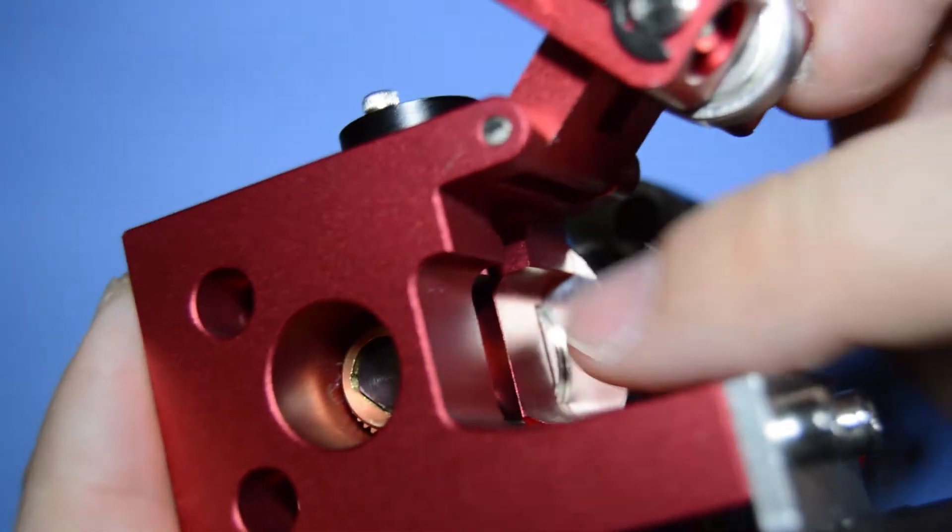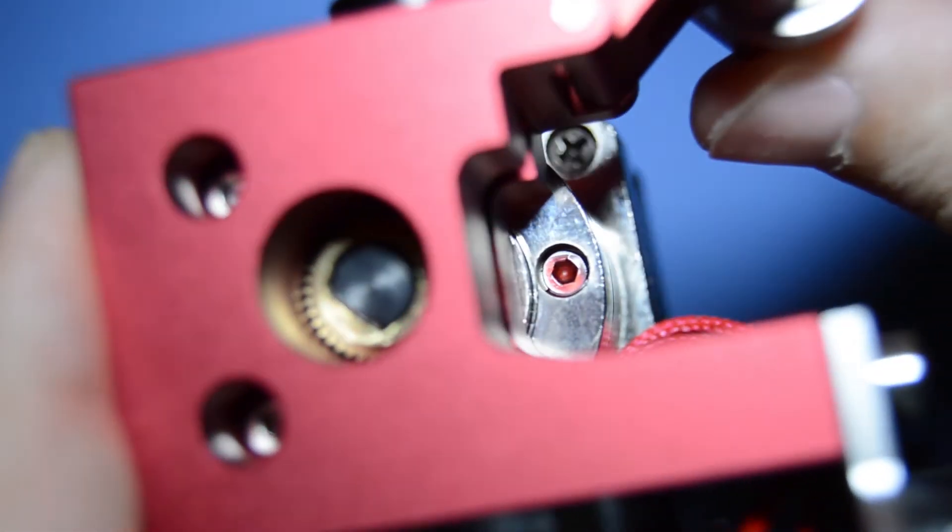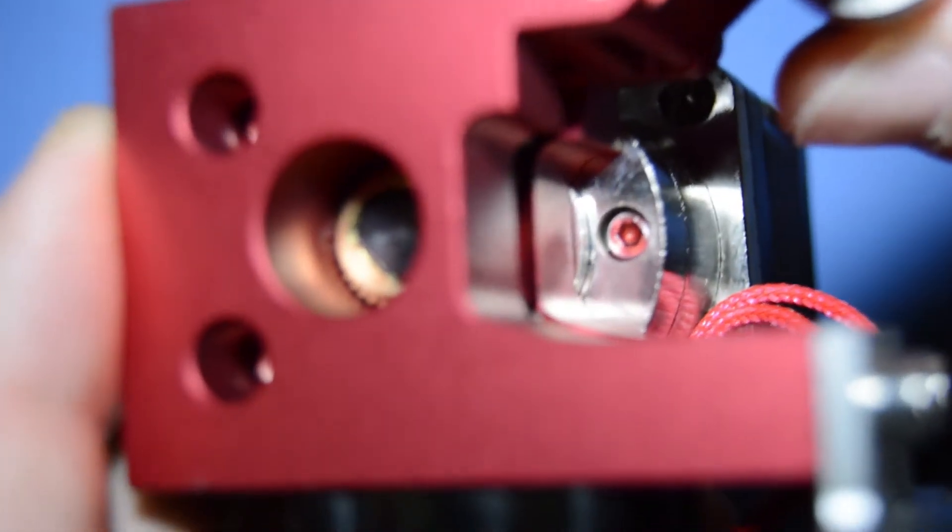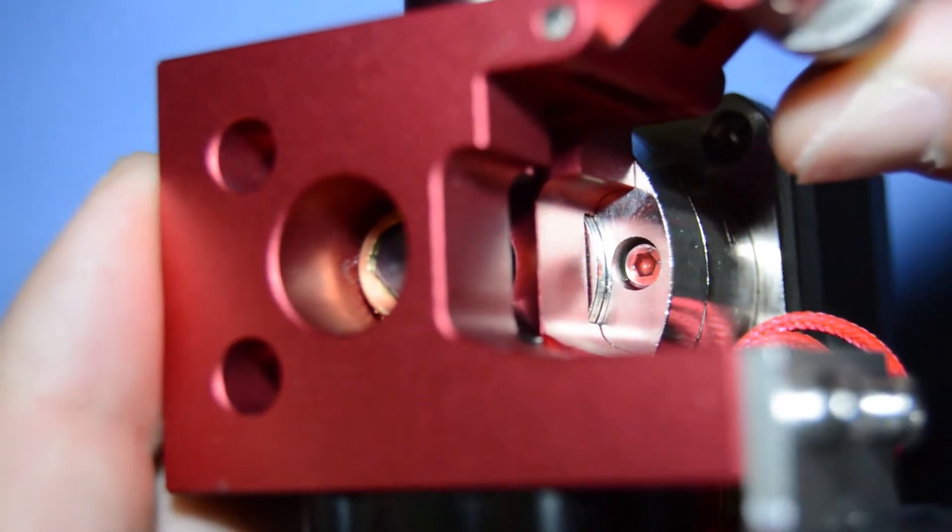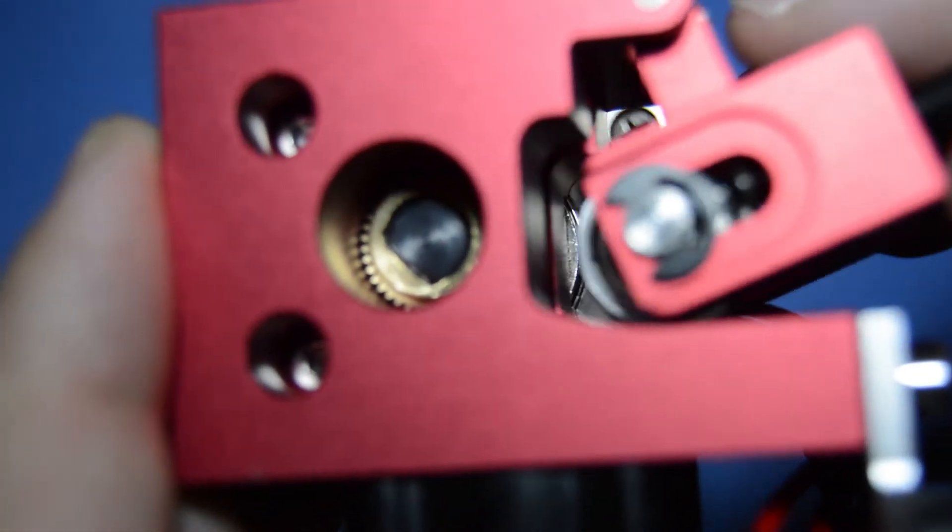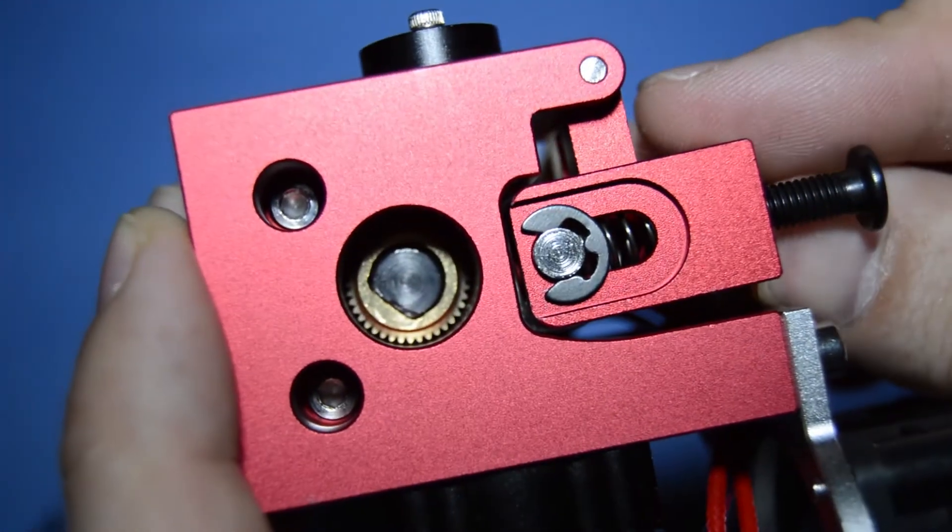As you can see, this round edge of the motor gear keeps the filament clamp from closing correctly. So one thing you can do is to file the extra bit off or add shims between the two parts.